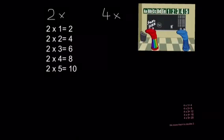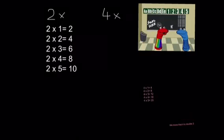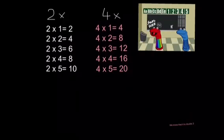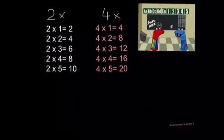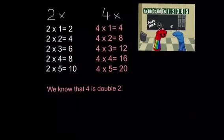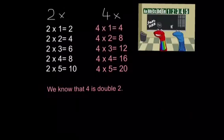Now the 4 times tables are a bit higher than the 2 times tables. However, there is a really simple way to work out our 4 times tables. We know that 4 is double 2, so all we have to do is double the answers to the 2 times tables to find the answers to the 4 times tables.